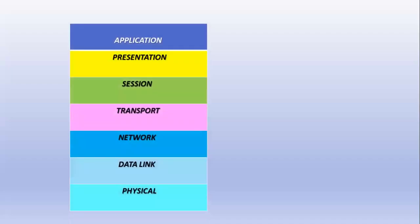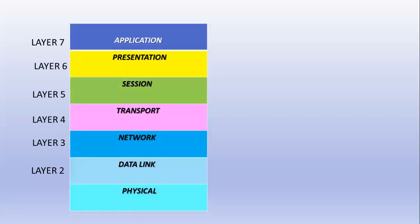Let's discuss the functions of these seven layers one by one. The seven layers of the OSI model are: application, presentation, session, transport, network, data link, and physical. They are numbered from layer seven to layer one from top to bottom. So layer seven is the application layer, six is presentation, five is session, four is transport, three is network, two is data link, and one is physical.